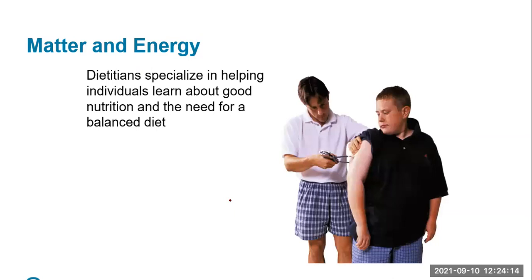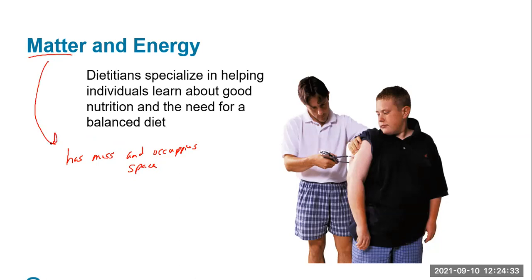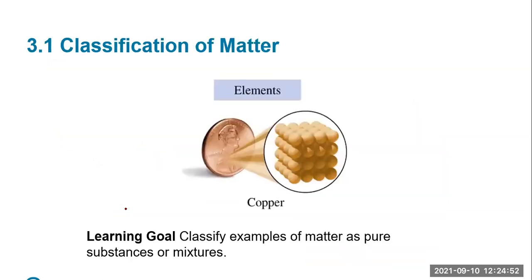Matter, as we talked about earlier in the first chapter, is really anything that has mass and occupies space. Essentially that's pretty much almost everything that we come across. As we also talked about earlier, there are three states of matter which we'll go into more detail here in this chapter: solid, liquid, and gas. These three states of matter are things we commonly come across in chemistry, and a lot of things we do involve the transition of matter from one state to the next.